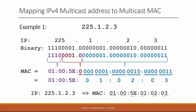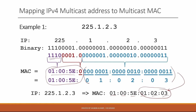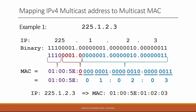To recap: the last 23 bits of the IP address are mapped to the MAC address, and the first 25 bits are fixed — 01:00:5E in hexadecimal replacing the first four bits, then the next five bits mapped to zero. Alternatively, you can consider the first nine bits replaced with 01:00:5E and a 0 bit if you prefer to do that in one step.